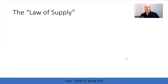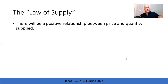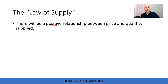Once we have this relationship in mind, what exactly is it going to look like? You'll recall the law of demand, which said we expect the relationship between price and quantity from the point of view of a consumer to be an inverse or negative relationship — the higher the price, the lower the quantity demanded. The corollary, the law of supply, flips that around: we expect a positive, upward-sloping relationship between price and quantity supplied. Just like with the law of demand, we want to explain the intuition of why we expect that, and there are two reasons.